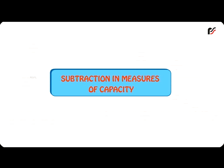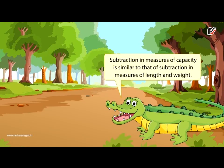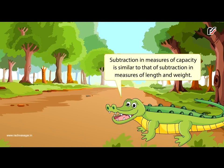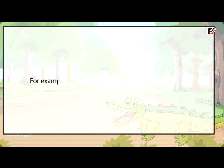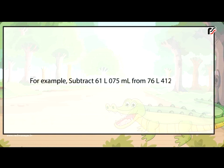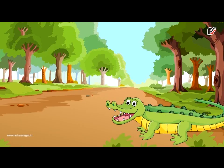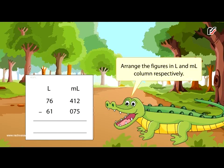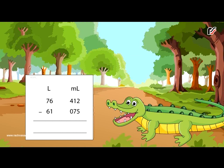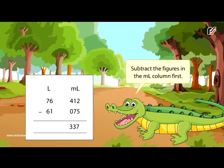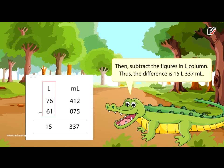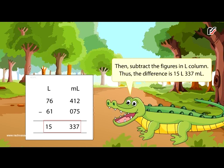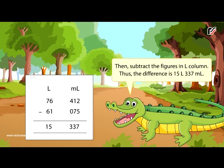Subtraction in measures of capacity is similar to that of subtraction in measures of length and weight. For example, subtract 61 litres 75 mL from 76 litres 412 mL. Arrange the figures in litre and millilitre columns respectively. Subtract the figures in the millilitres column first, then subtract the figures in the litres column. Thus, the difference is 15 litres 337 millilitres.